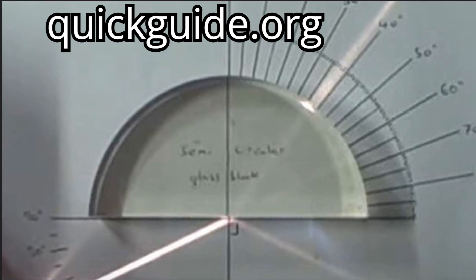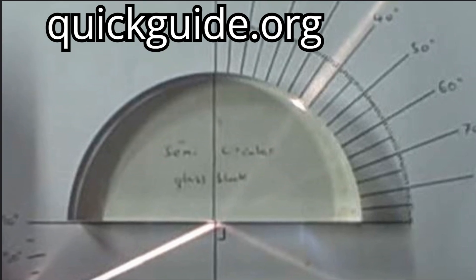Snell's law states that for a given pair of medium, the angle of incidence of light and its refraction will follow a constant ratio. That is, the sine of the angle of incidence and the sine of the angle of refraction is constant.